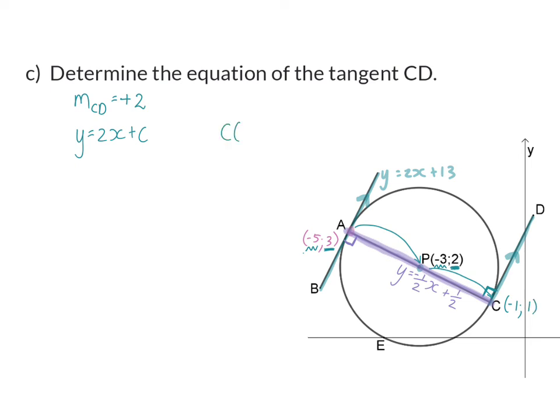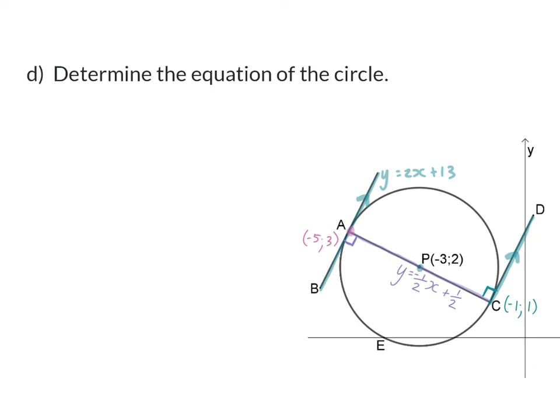Therefore C's coordinates will be (-1, 1) and now we can substitute this into x and y. Therefore c will be equal to 3 and the equation of tangent CD is then y = 2x + 3.